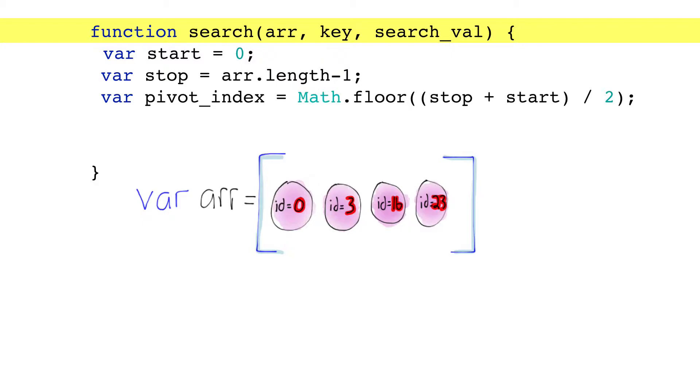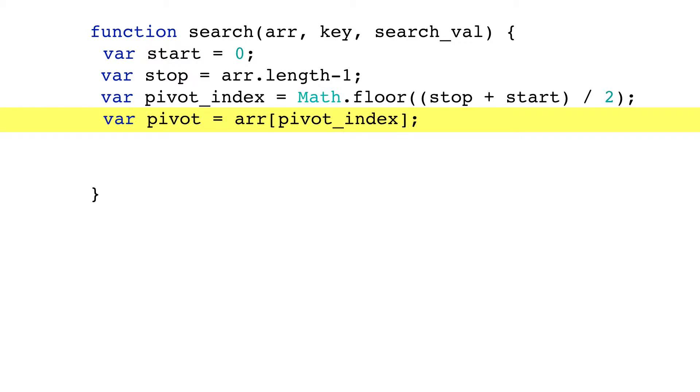When we grab the pivot item in the middle, we can use the key to extract the value in it.